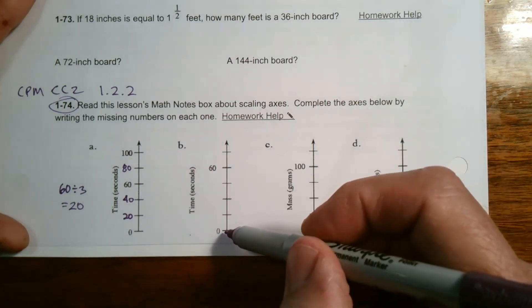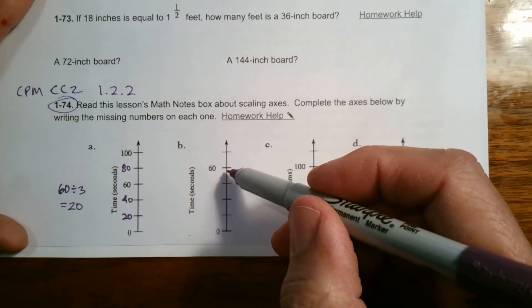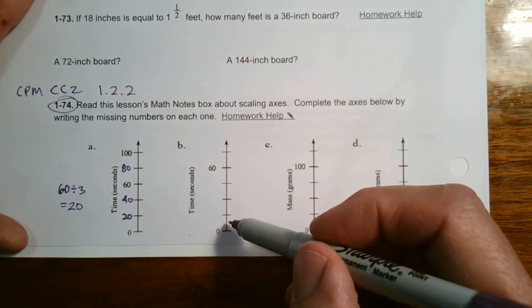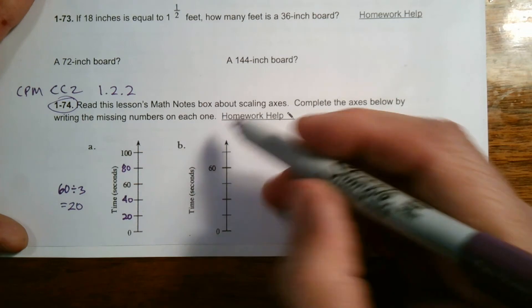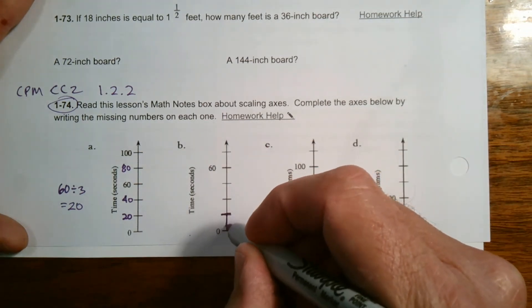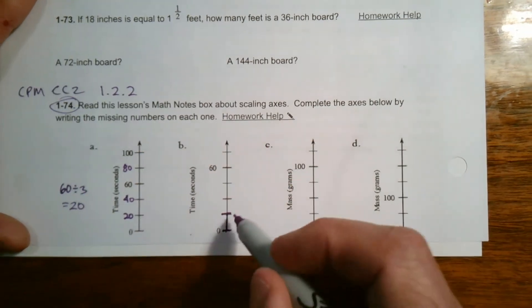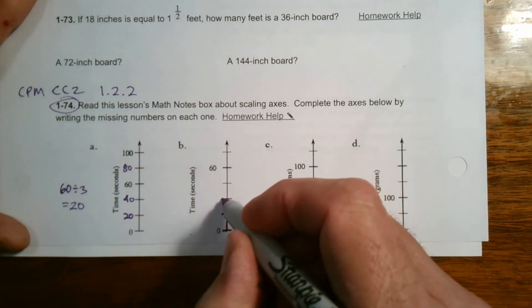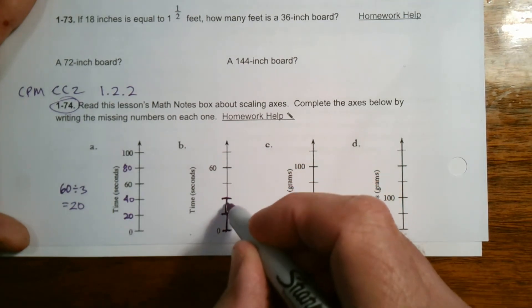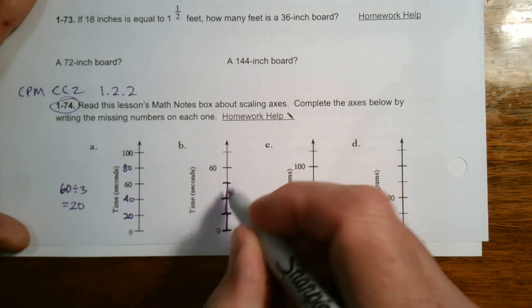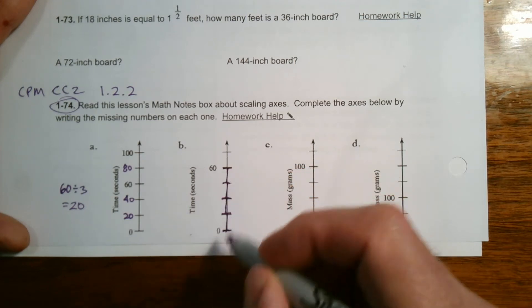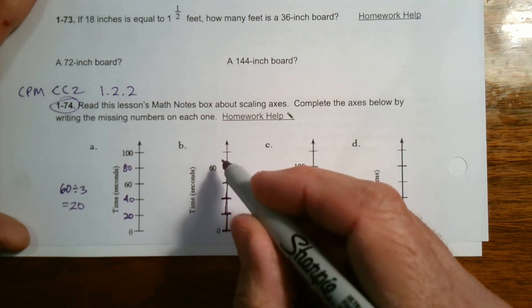So here I go again, zero to 60. But now I count my spaces. I have one, two, three, four spaces. Each of the spaces are the ones divided. So that's a space. A space is divided by those tick marks. So there's one, two, three, four. Four spaces in between zero to 60.